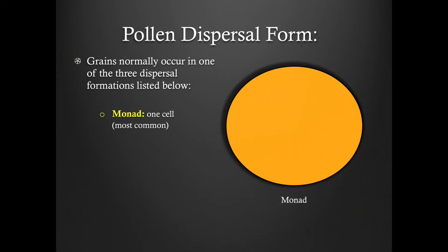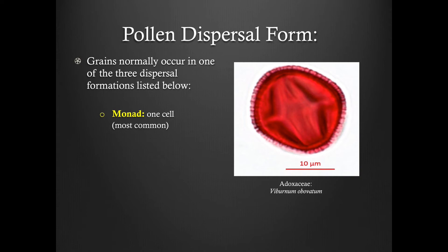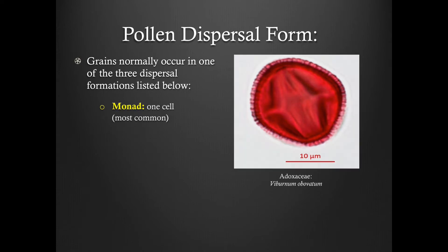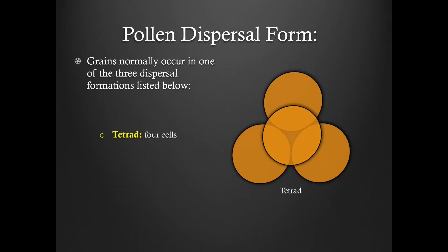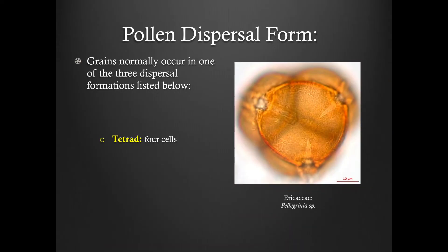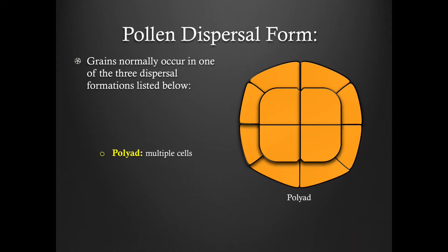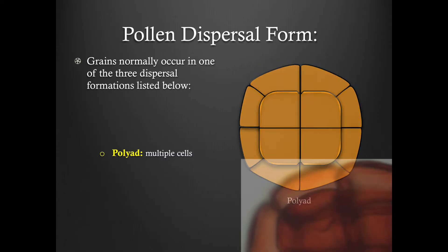Monads are single-cell pollen grains. Here is an example of a monad. Tetrads are pollen grains comprised of four cells. Here is an example of a tetrad. Polyads consist of more than four cells. Here is an example of a polyad.